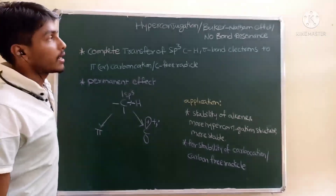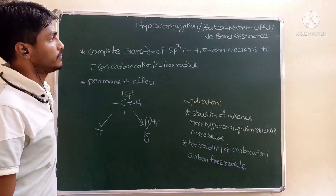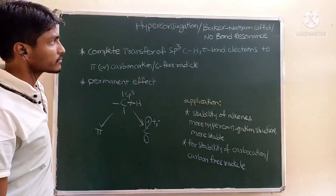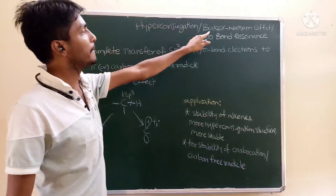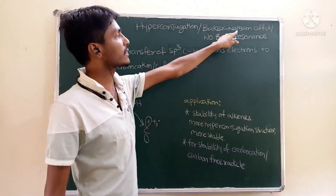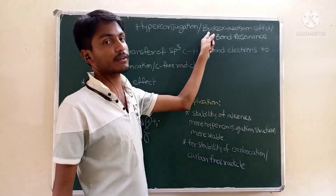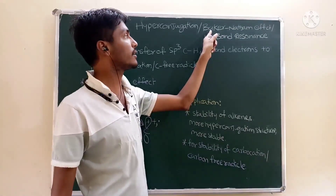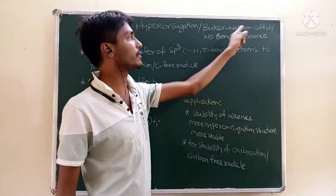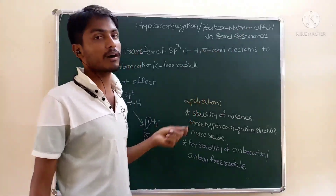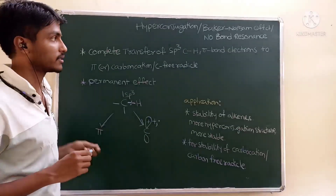The topic is hyperconjugation, also known as the Baker-Nathan effect or no-bond resonance.